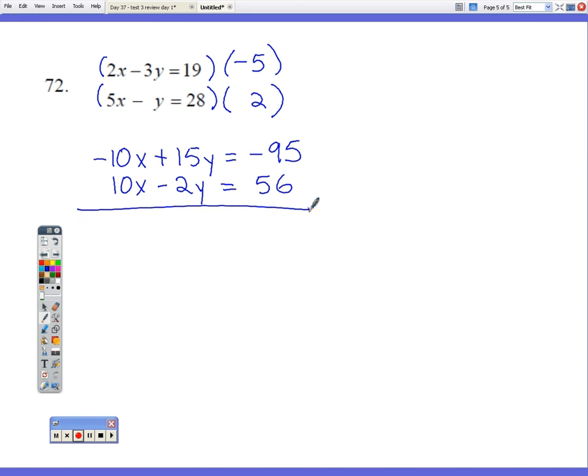Now I'm going to add down. Negative 10x plus 10x is 0, so they eliminate. 15y minus 2y is 13y.